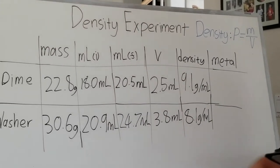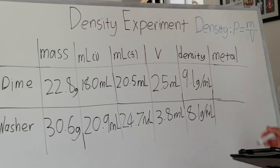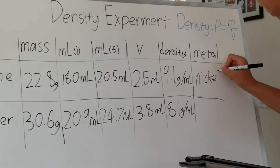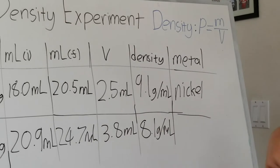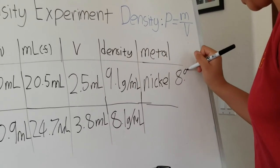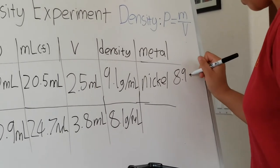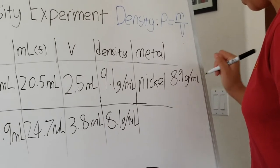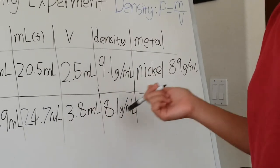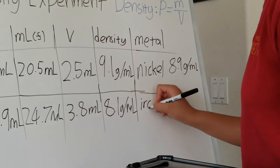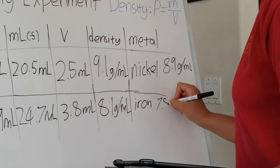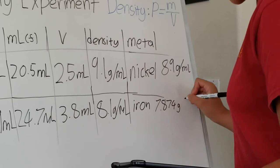Okay, so for dimes, you probably already know the metal, which is nickel. And nickel's density is 8.9 grams per milliliter. For the washers, the metal is iron, and that density is 7.874 grams per milliliter.